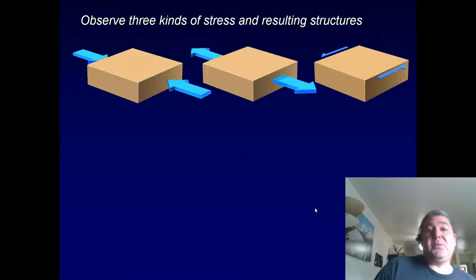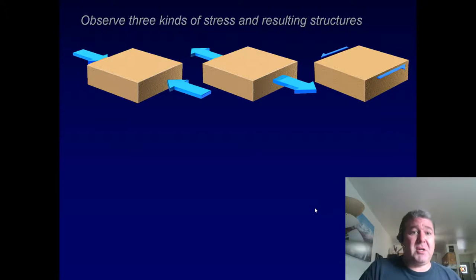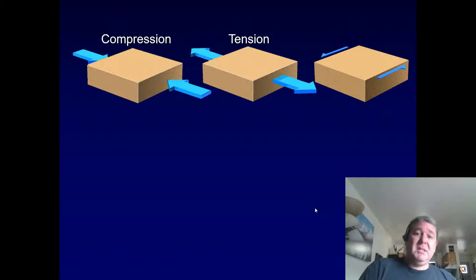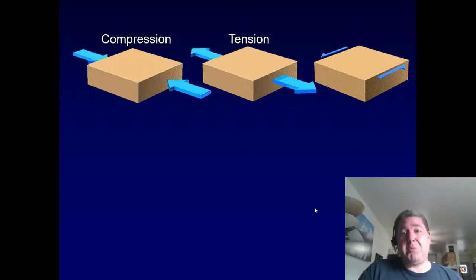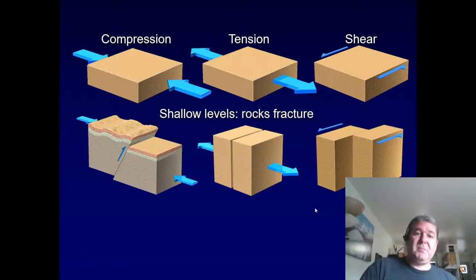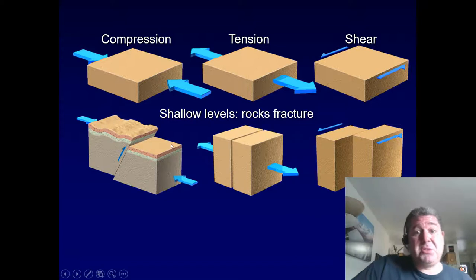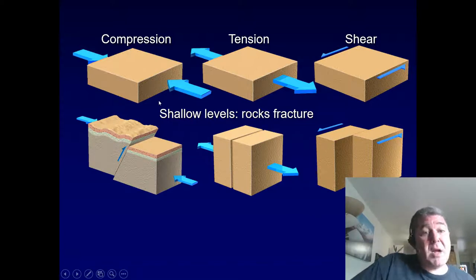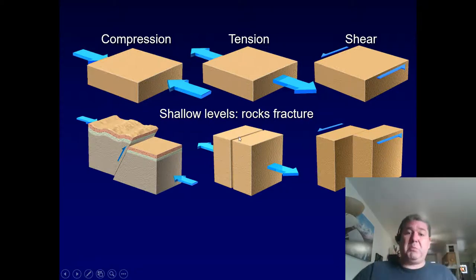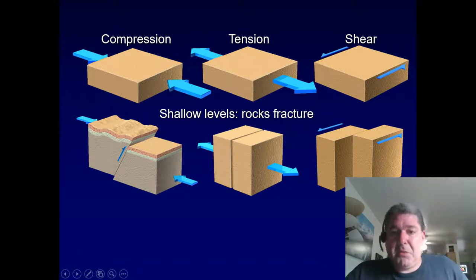There are three kinds of stress and resulting structures. Compressional stress occurs at convergent margins; tensional stress at divergent margins; and shear stress at transform boundaries. At shallow levels, these result in fracturing — we get joints, where rock splits apart, or faults of all different types, including reverse faults and strike-slip faults.